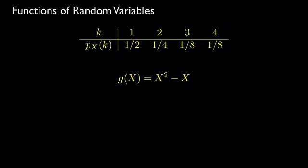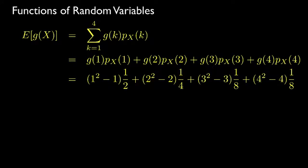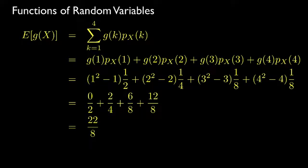Suppose we want to determine the expected value for a function equal to the square of the random variable minus its value, or x squared minus x. We evaluate the expected value using the definition, which is the sum of the products of the function evaluated at each value with the probability of taking those values — that is, g(1) times the PMF at 1, plus g(2) times the PMF at 2, plus g(3) times the PMF at 3, plus g(4) times the PMF at 4. This evaluates to 22 over 8, or 2.75.